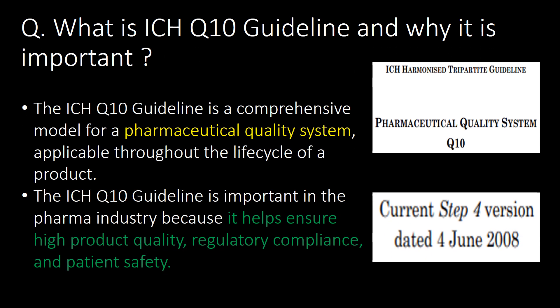Welcome. We will start with some basic questions and then go in detail. First question: what is the ICH Q10 guideline and why is it important? The ICH Q10 guideline is a comprehensive model for a pharmaceutical quality system applicable throughout the life cycle of a product. It is important in the pharma industry because it helps to ensure high product quality, regulatory compliance, and patient safety.